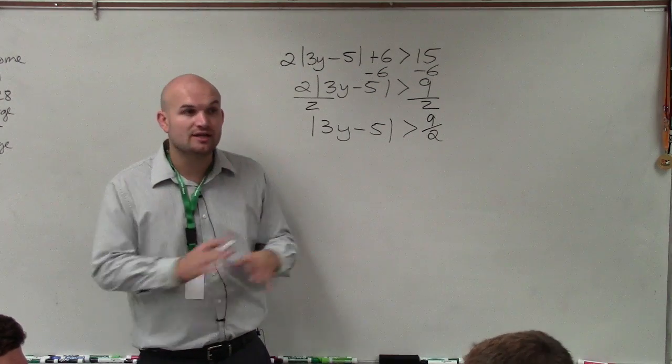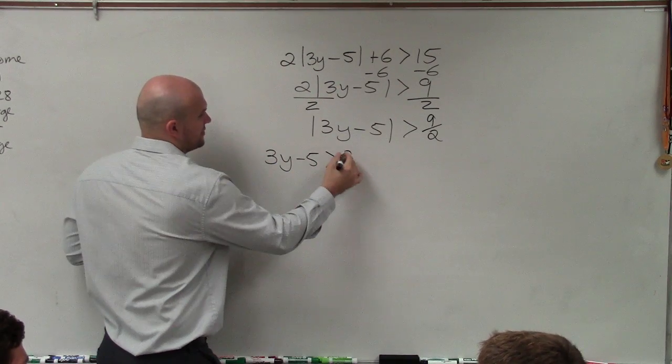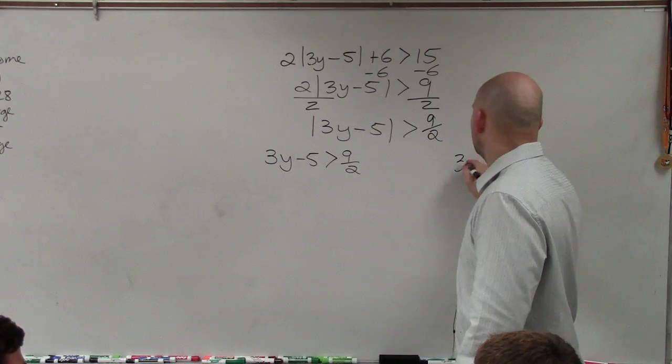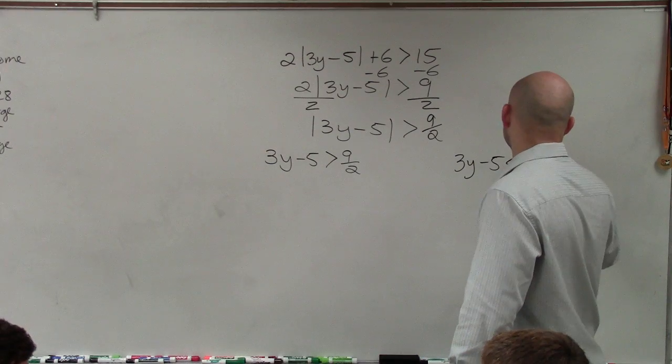For an inequality, you're going to do the exact same thing. So you say 3y minus 5 is greater than 9 over 2. Then you have to do negation. 3y minus 5 is less than a negative 9 over 2.